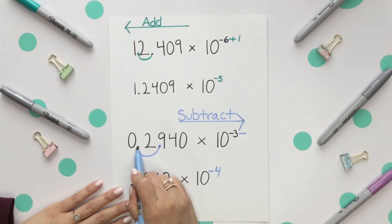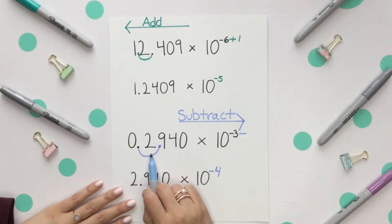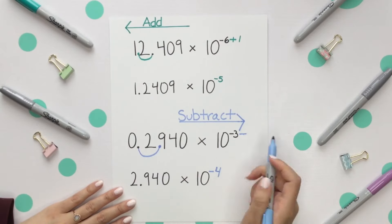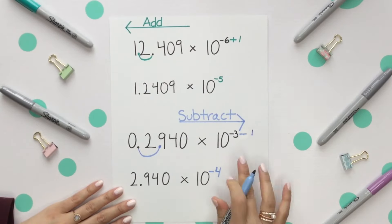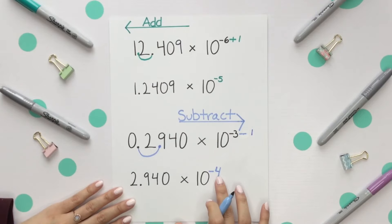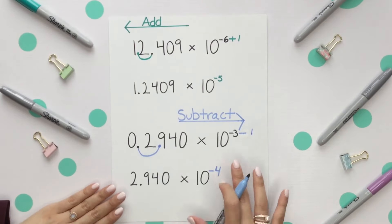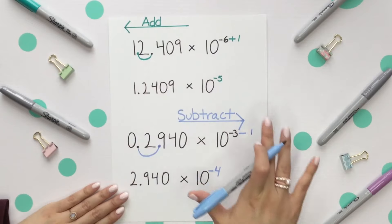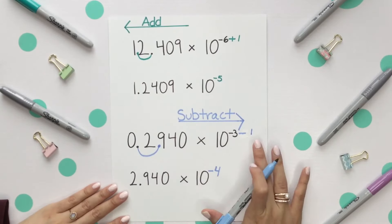Now we're moving this decimal place over one to the right. When we move it to the right, we subtract from the exponent by one, making it a negative four. So when you move to the left, you add; and when you move to the right, you subtract.